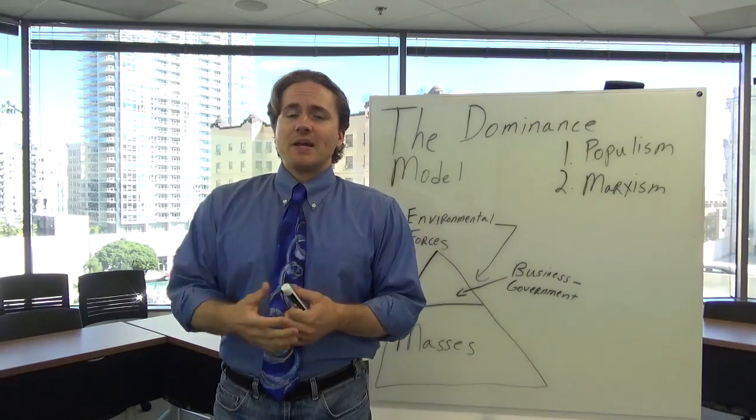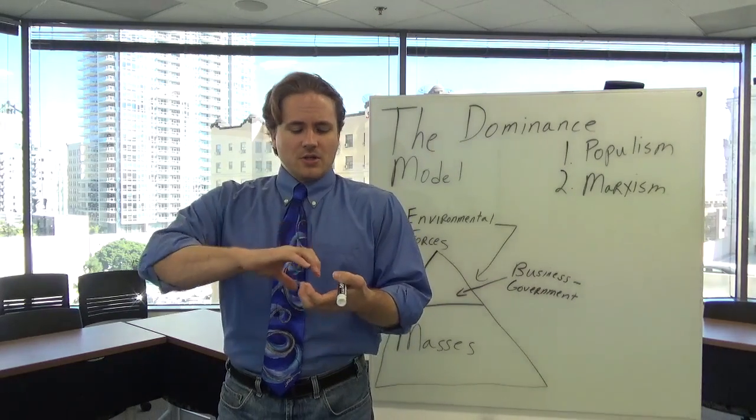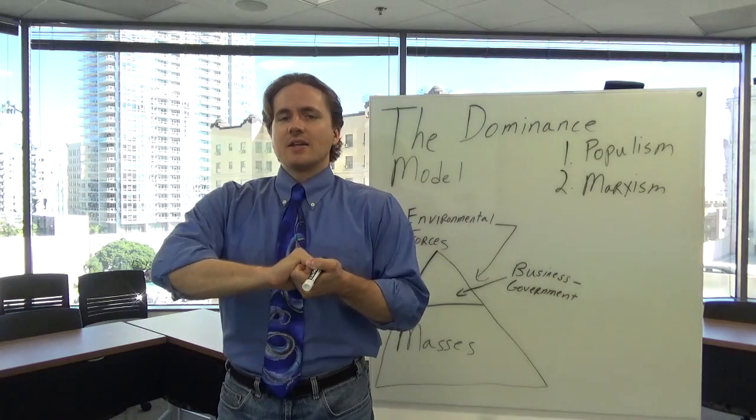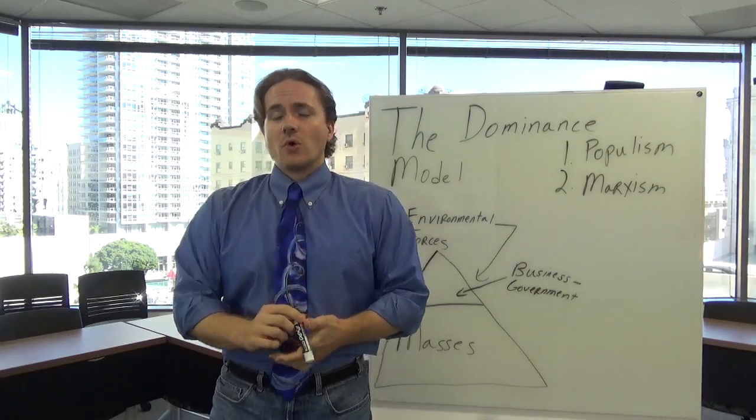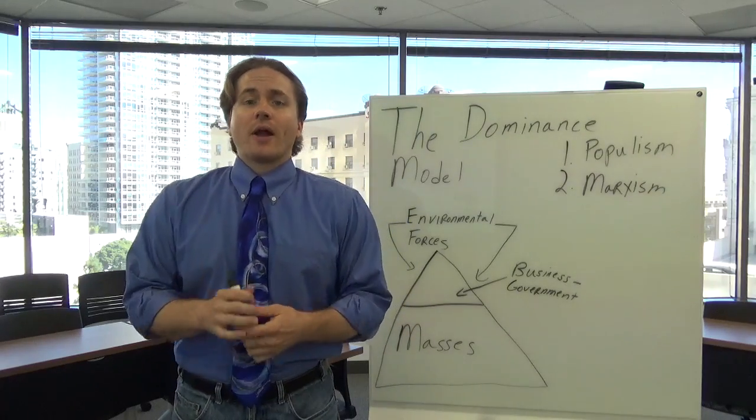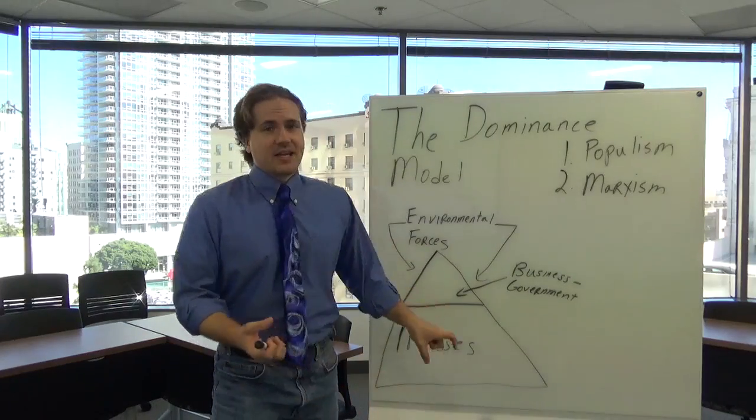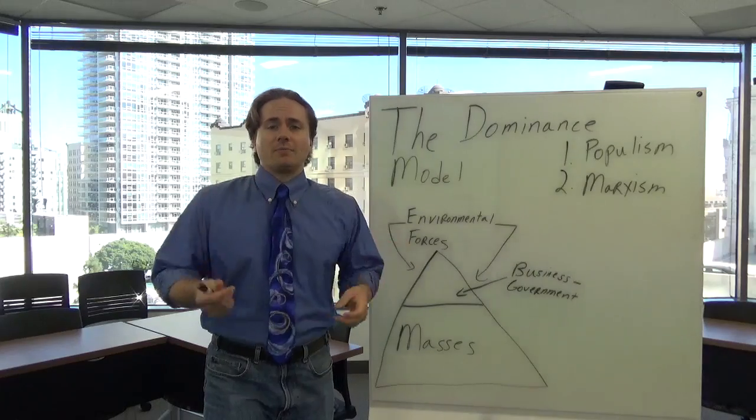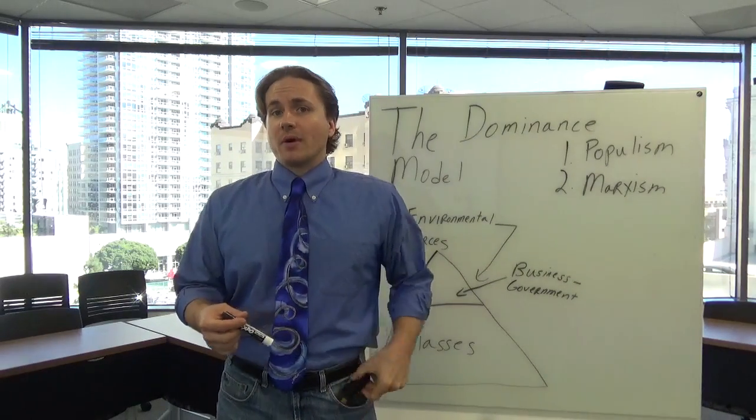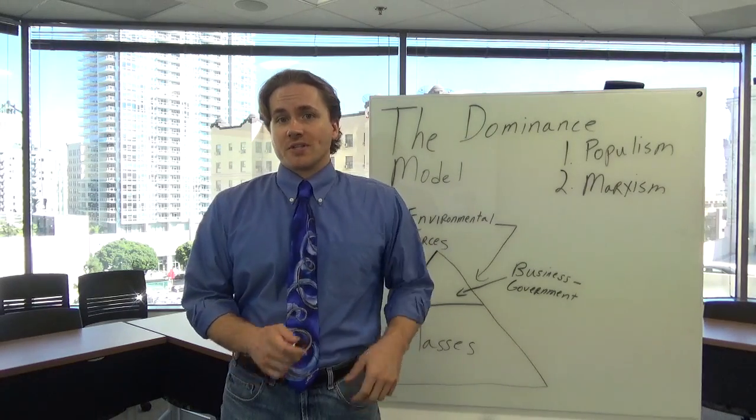So Marx was basically saying that through this kind of class struggle that existed, those at the top basically did everything in their power to exploit those on the bottom. And he called for a revolution, which would basically take this model and flip it upside down on its head, crush those at the top, and then power would be more evenly distributed among everybody. It would be what he would call the dictatorship of the proletariat.